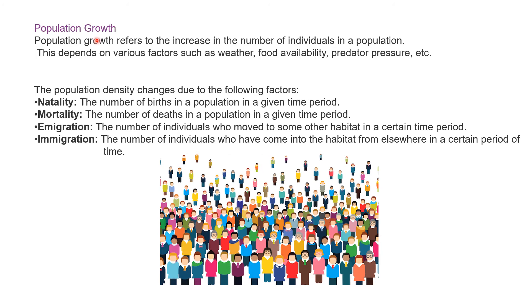Population growth refers to the increase in the number of individuals in a population, depending on factors like food availability, weather, predator pressure and competition. Population density changes due to: natality (births in a given period), mortality (deaths in a given period), emigration (individuals moving out to another habitat), and immigration (individuals coming into the habitat from elsewhere). If natality is high, population grows; if mortality is low, population grows; if immigration is high, population grows.